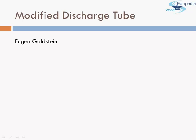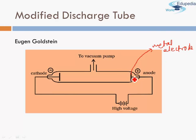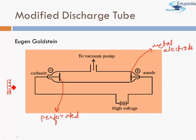The discovery of positive rays was more or less similar but with a slight variation. Instead of a discharge tube, it was discovered in a modified discharge tube. It was first observed by Goldstein in an apparatus basically similar to a discharge tube, except that instead of a perforated anode, Goldstein used a normal anode but instead used a perforated cathode.